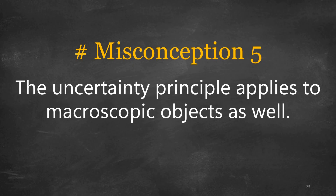Finally, the fifth misconception is that the uncertainty principle applies to macroscopic objects as well. The uncertainty principle applies specifically to quantum-scale objects such as particles. While there are quantum effects at the macroscopic scale like superconductivity or superfluidity, the uncertainty principle does not apply to macroscopic objects — it becomes negligible and practically unnoticeable at larger scales, essentially canceling out on average.